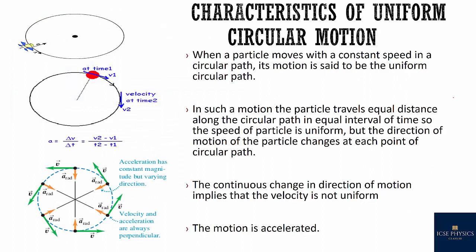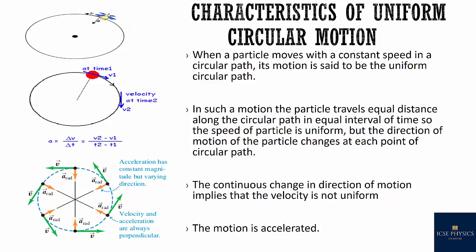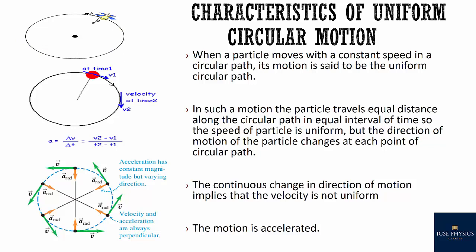Now let's see what happens in uniform circular motion. When a particle moves with constant speed in a circular path, the motion is called uniform circular motion. In such motion, the particle travels equal distances along the circular path in equal intervals of time, so speed is uniform.